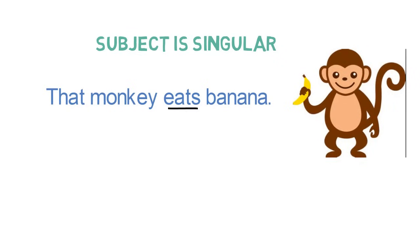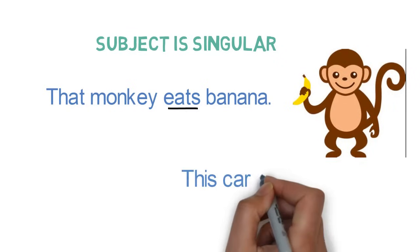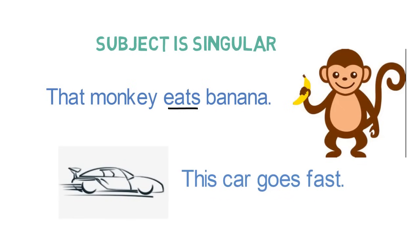Let's look into one more example. This car goes fast. Here, the subject is car, which is singular. Verb will also be singular. In this case, it is goes.